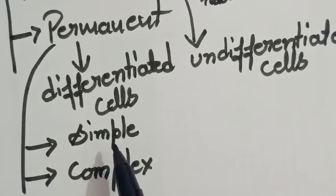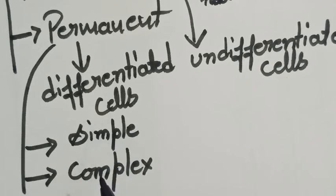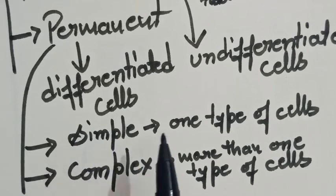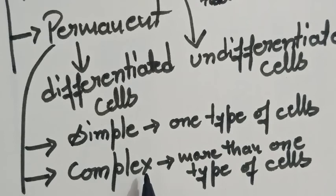Simple permanent tissues are made up of one type of cells. When the same kind of cells — one type of cells — are present, they form simple permanent tissues. When the tissue is made up of more than one type of cells, it is known as complex permanent tissues.